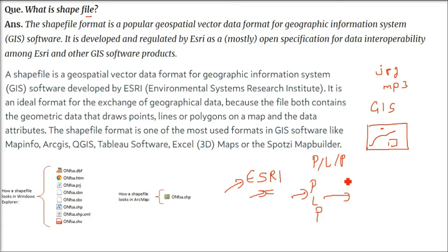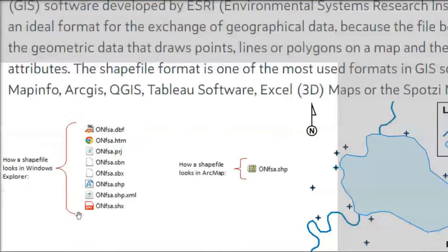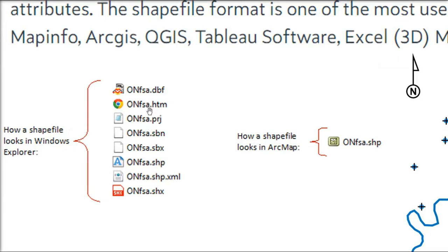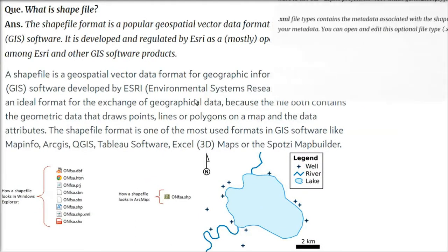A shapefile is not a single file — it has multiple files, some mandatory and some optional. You need location, database, attribute, metadata, and optimization information, and different file formats serve these needs. For example, in ArcMap and ArcInfo you can see point, line, and polygon layers. The .shp extension is a mandatory ESRI file that stores the feature geometry — point, line, polygon — as spatial vector data. The .shx is also mandatory; it stores the AutoCAD shape index position and is used for searching forward and backward through the data.